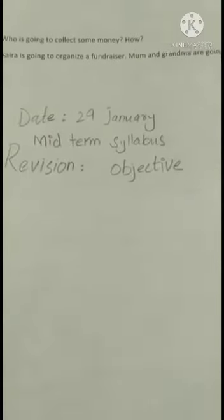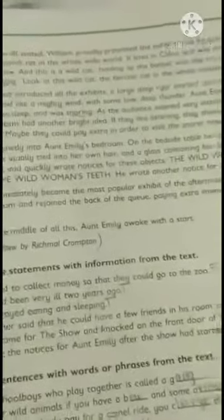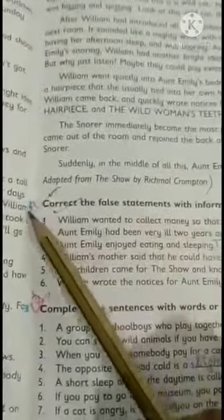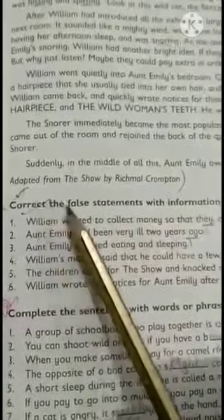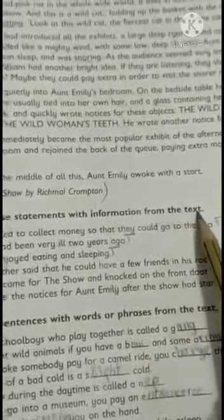First of all, we will revise our objective. I will tell you the page number and you will be able to see it. The very first is page number 17, lesson number 3, exercise 2: Correct the false statements with information from the text.